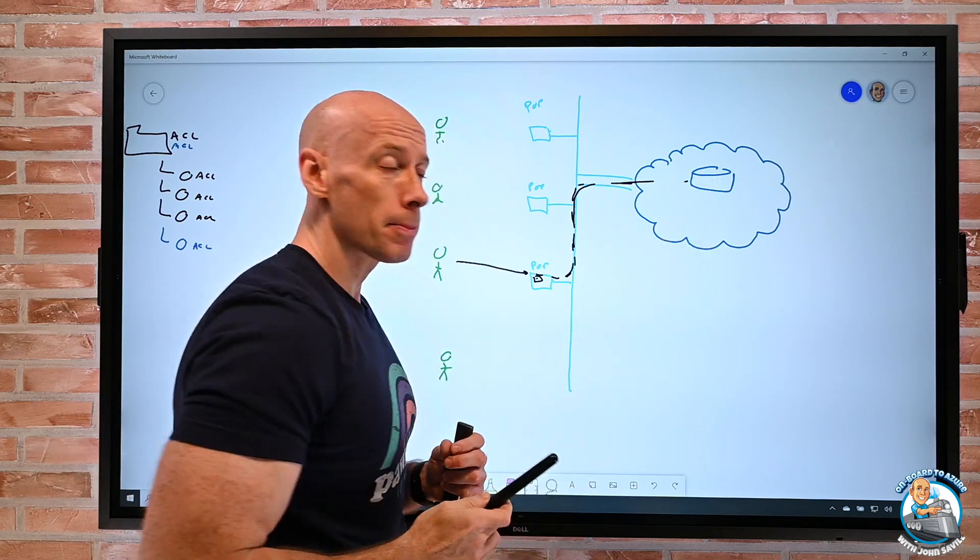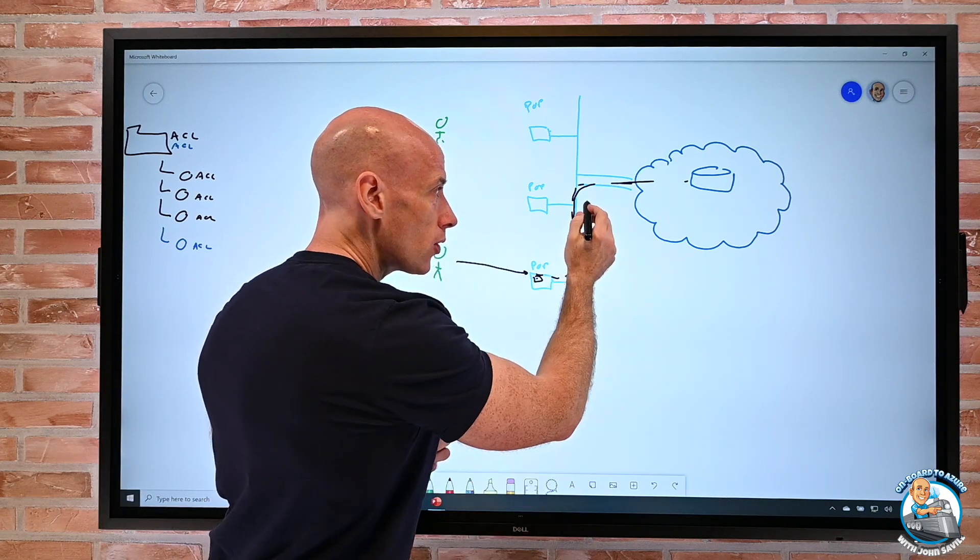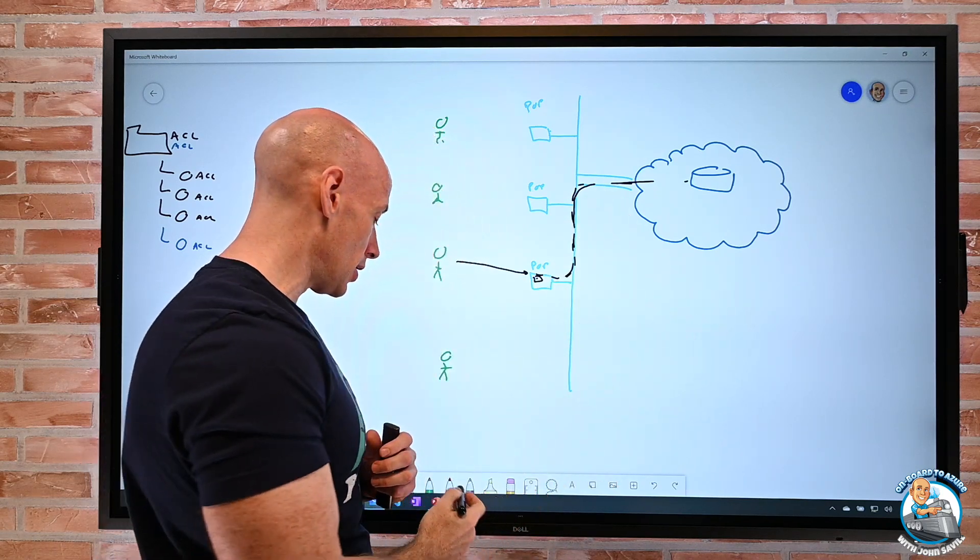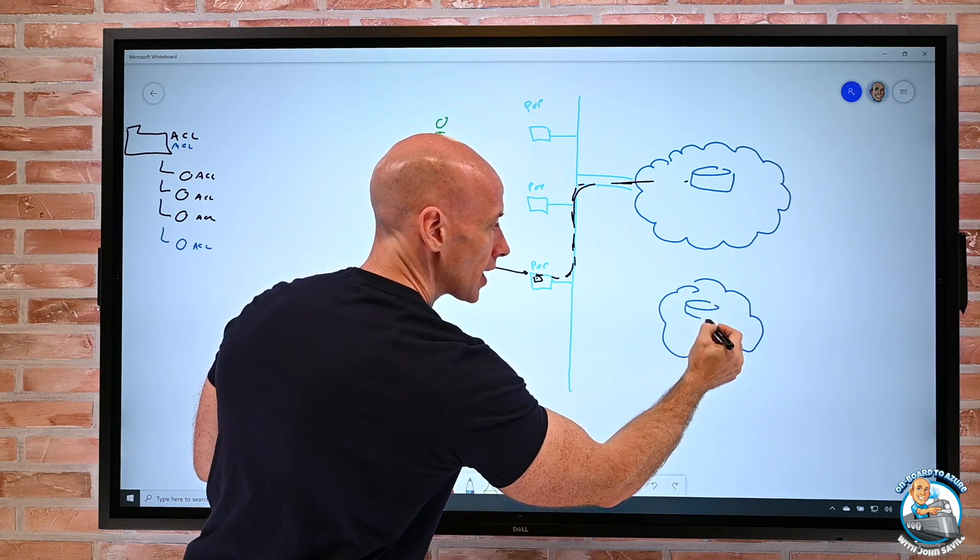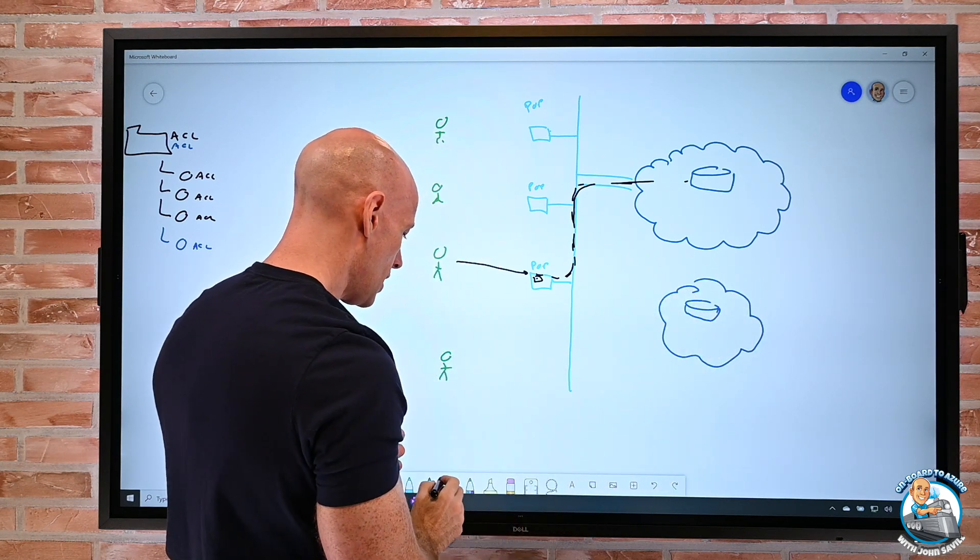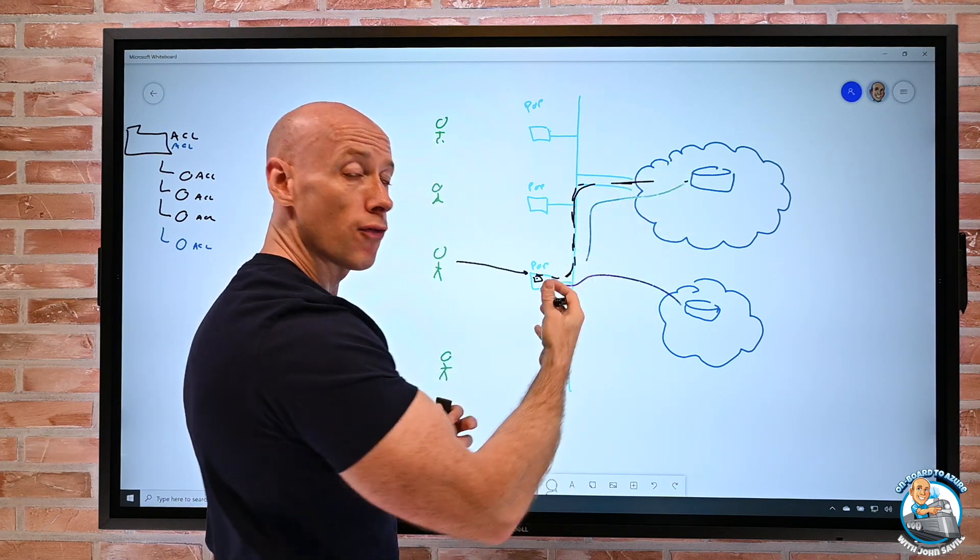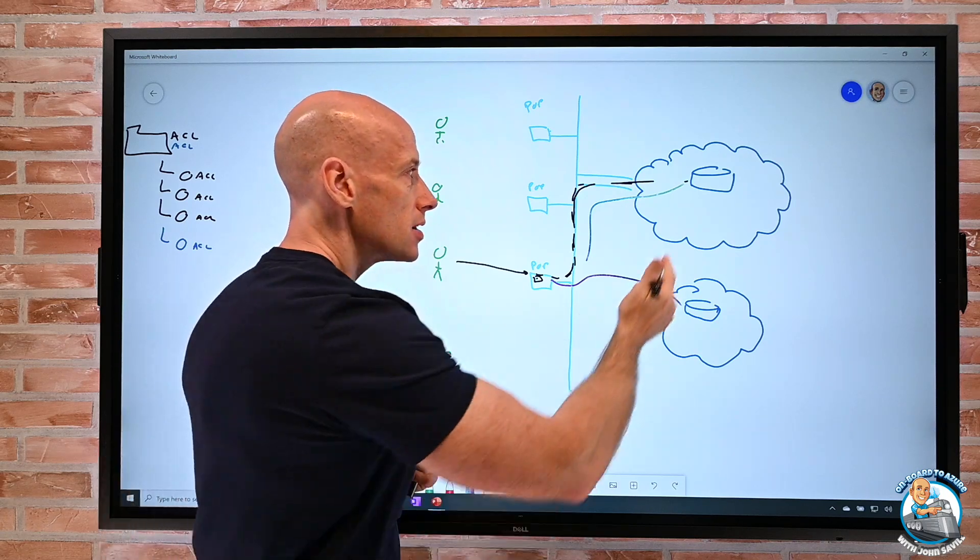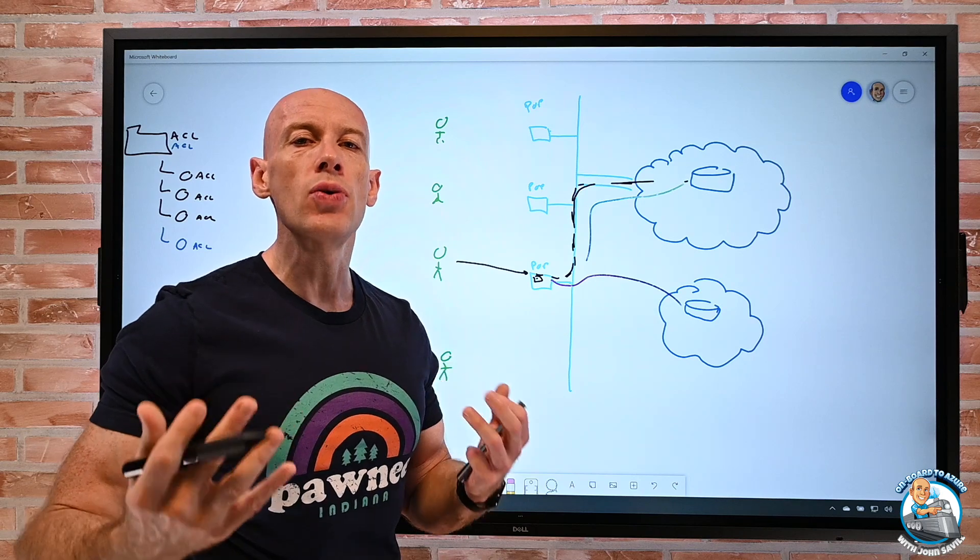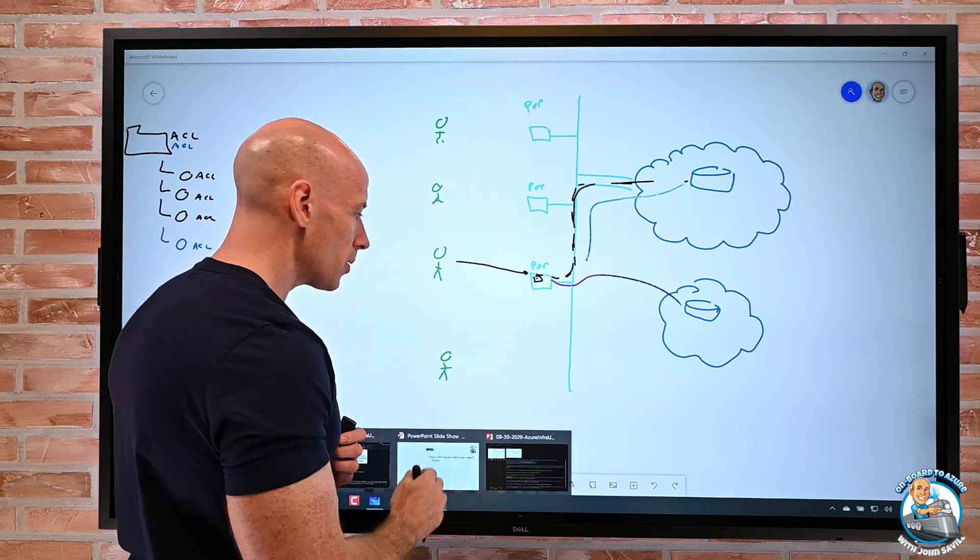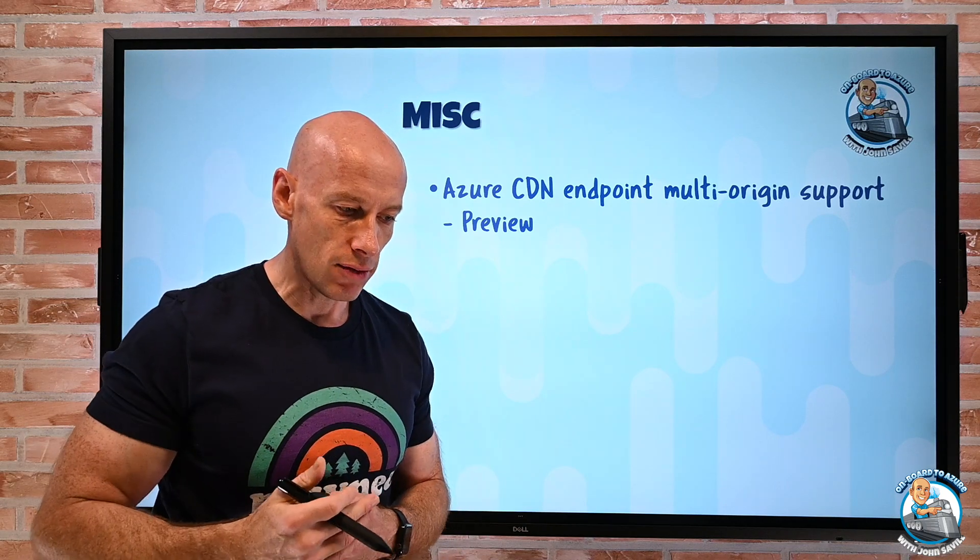the endpoint could now fall over to a different origin. So I would be in a different region. I have another storage account or a different media service. And these were all configured as possible origins for that particular endpoint. So if this was unavailable for some reason, it can go and fall over to a different one now. So that multi-origin can be super useful for kind of the balancing and for that resiliency for my services.